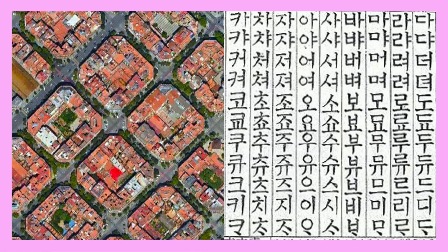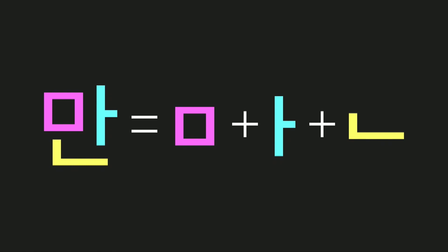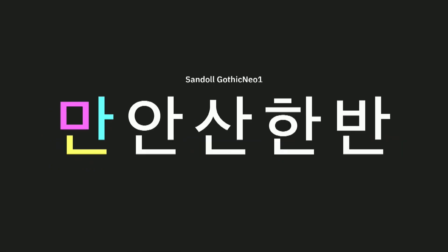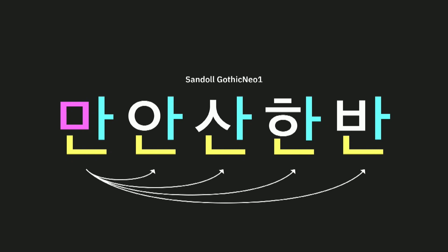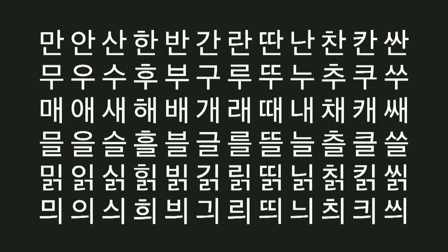Hangul looks more like Eixample. Hangul was also invented quite recently compared to other scripts. King Sejong, the creator of Hangul, designed it based on advanced knowledge of linguistics. He designed Hangul as a composition of individual parts, and some parts are repeated in multiple letters. It means that if you create one part, you can easily duplicate it to form the other characters. This repetitive, predictable structure is key to manufacturing Hangul faster and better.